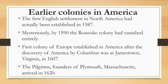The first English settlement in North America had actually been established in 1587, when a group of colonists including 91 men, 17 women, and 9 children, led by Sir Walter Raleigh, settled on the island of Roanoke. Mysteriously, by 1590 the Roanoke colony had vanished entirely; historians still do not know what became of its inhabitants. The first colony established in America after the discovery by Columbus was at Jamestown, Virginia, in 1607.